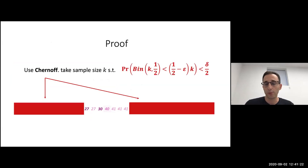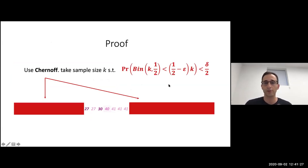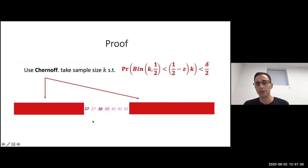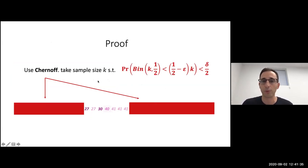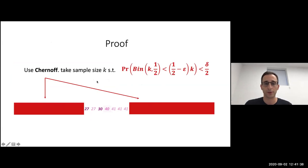The proof is also very simple — just applying Chernoff. You have a binomial distribution. You sample at random and the probability of sampling too much from one part versus another is very small. So it's very simple to analyze.